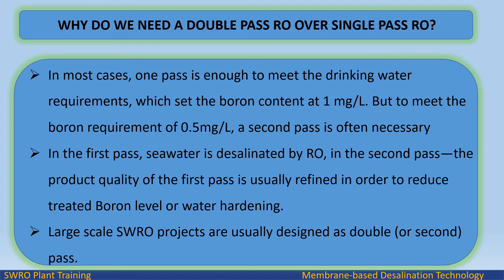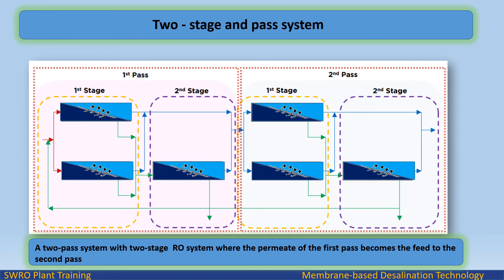Large-scale SWRO projects are usually designed as double or second pass — a two pass system with a two-stage RO system configuration, where the permeate of the first pass becomes the feed to the second pass.